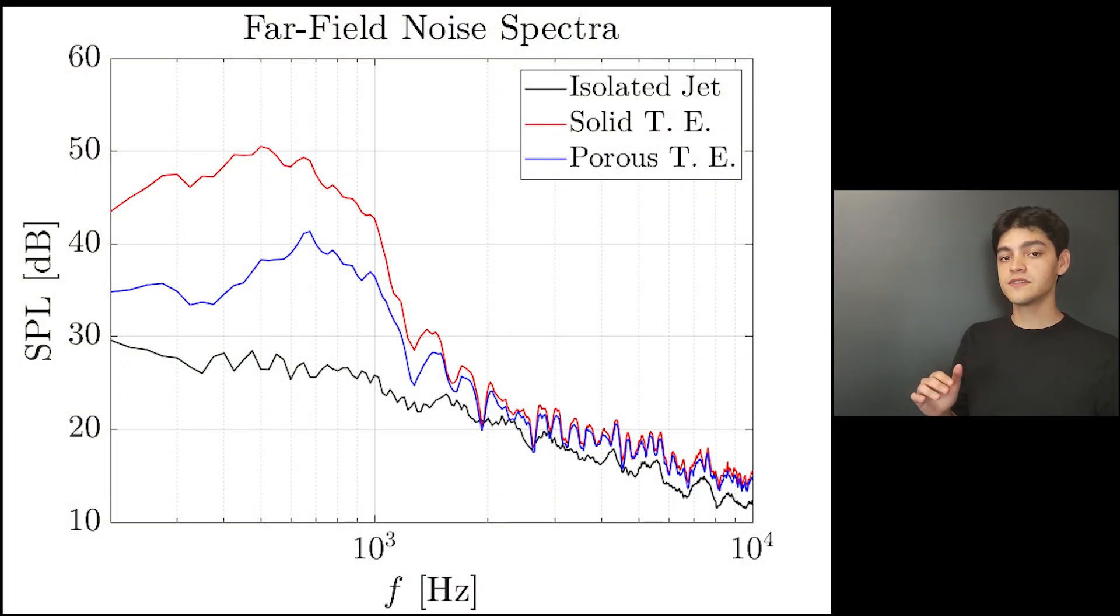Now, when we check the results for the entire frequency range of our measurements, we can see, comparing first the isolated and solid trailing edge curves, that the installation effects are responsible for a strong noise increase, particularly at low frequencies up to 1100 Hz, as you can see, for this configuration. And the maximum increase that we get is on the order of 20 dB, so that's a lot.